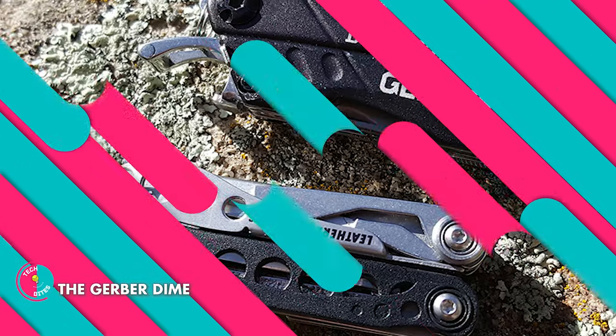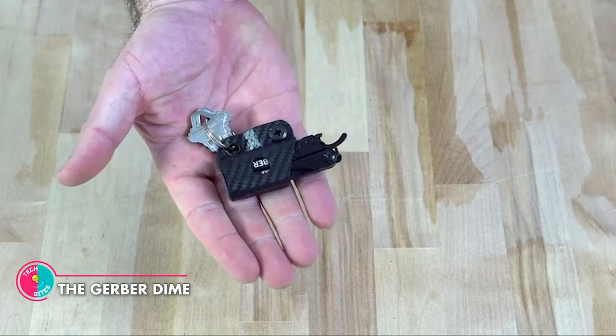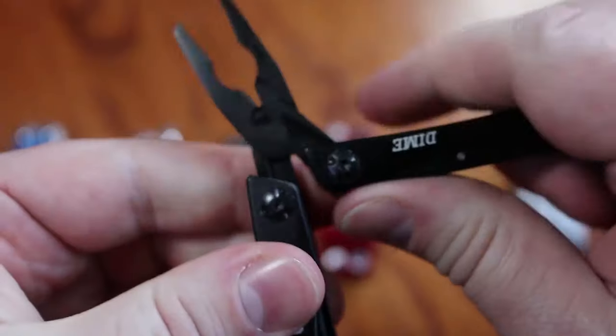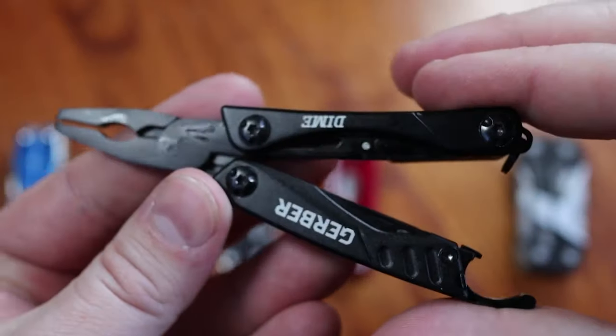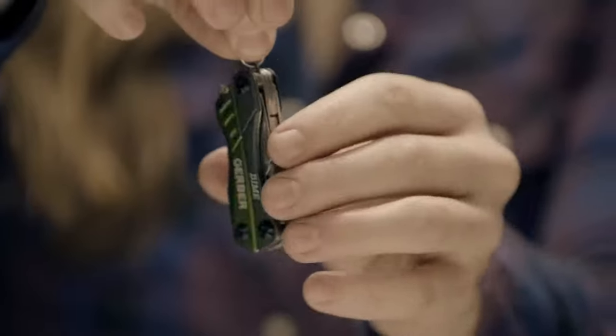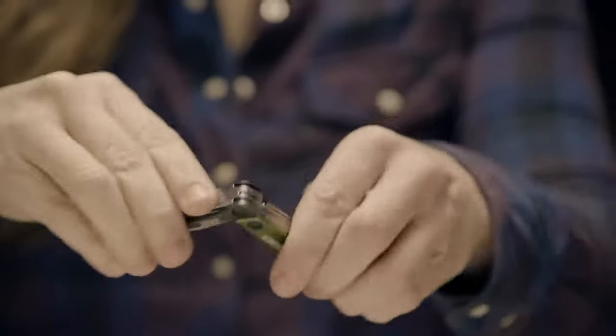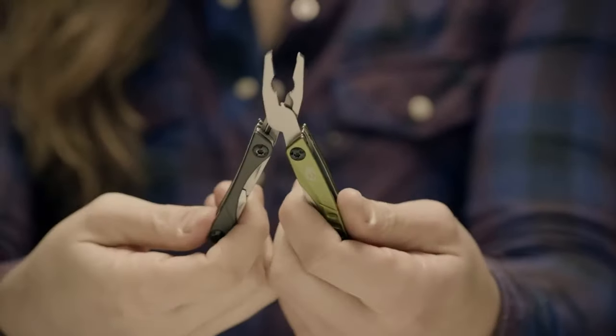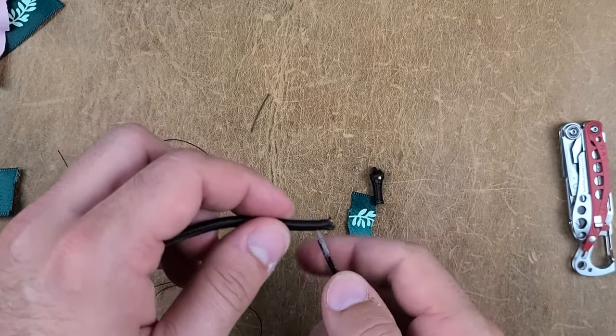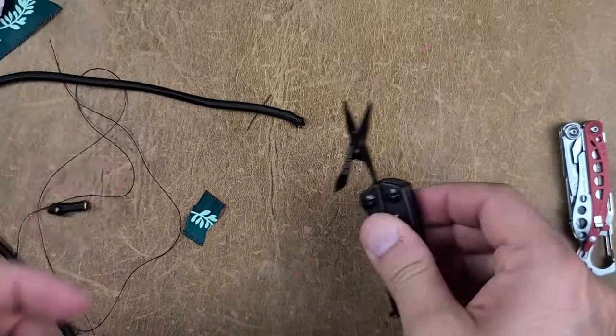The Gerber Dime. This multi-tool is small enough to fit in your pocket, but powerful enough to tackle any task you throw at it. It has needle-nose spring-loaded pliers, a wire cutter, a blade with a fine edge, a retail package opener, scissors, a bottle opener, tweezers, a file, and spring-loaded pliers. It is the perfect daily companion to help you tackle any task that comes your way.